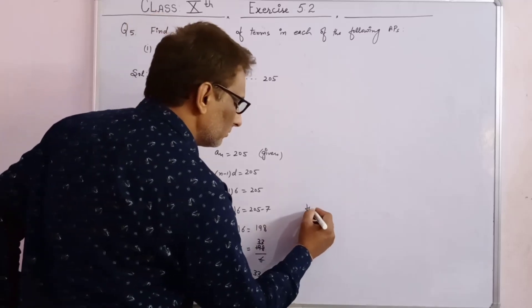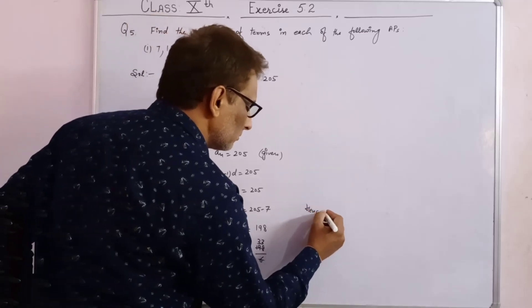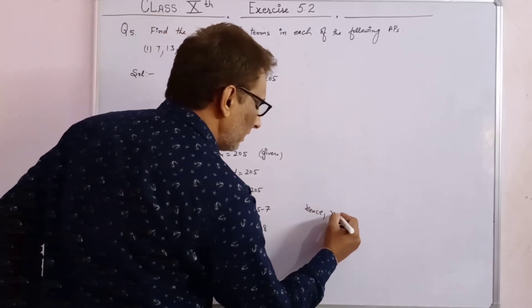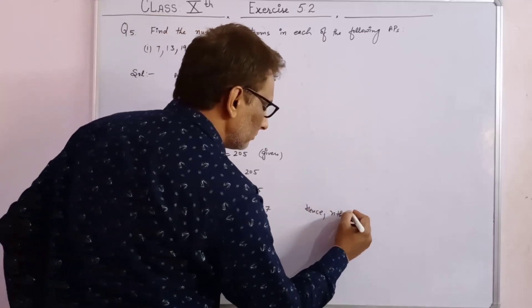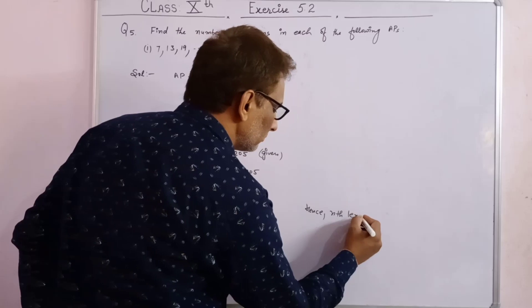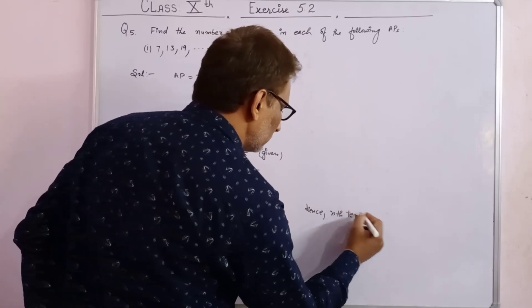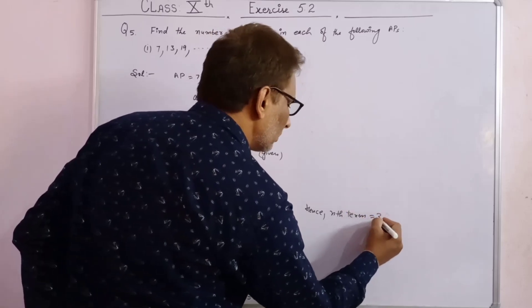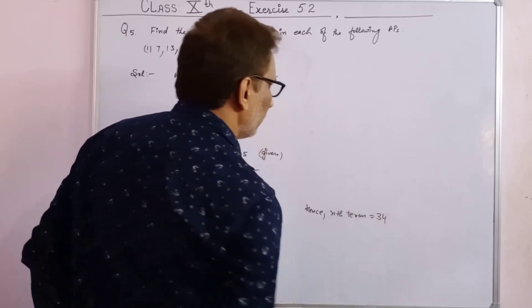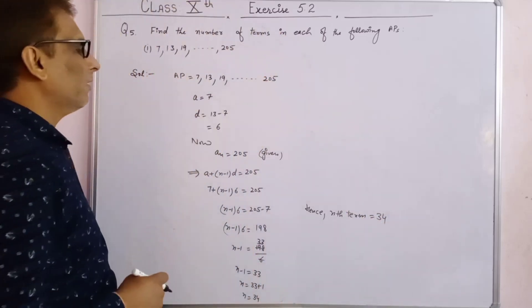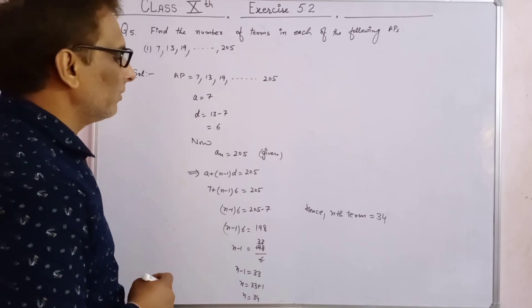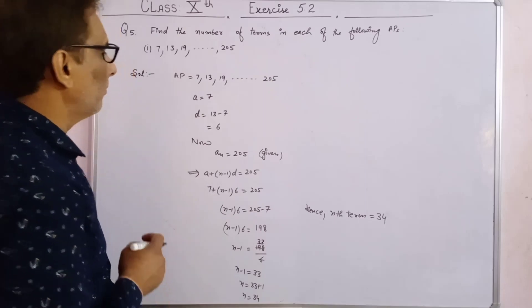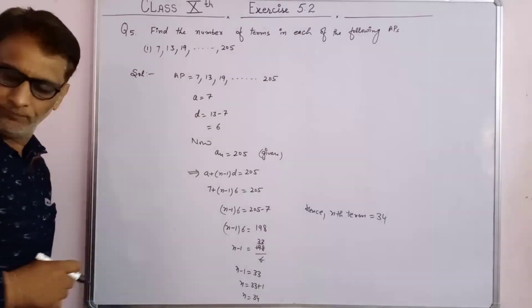Hence, the nth term equals 34. So, 205 is the 34th term of this AP.